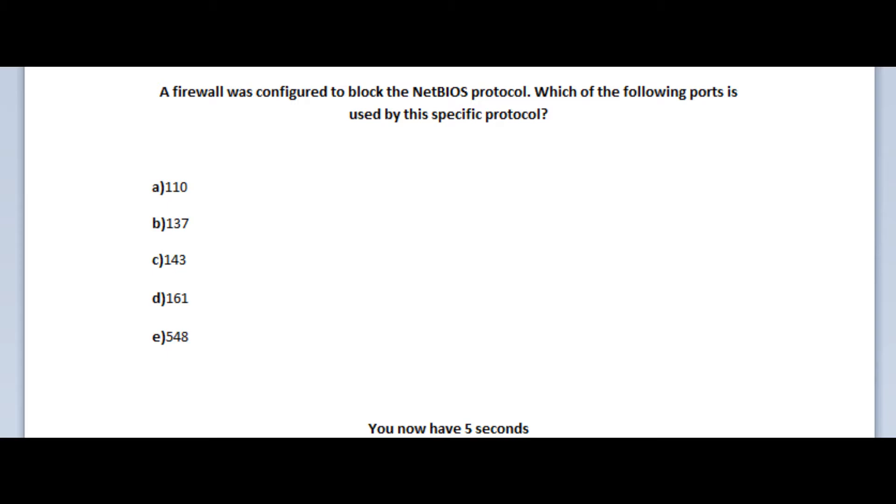Let us jump to our seventh question. A firewall was configured to block the NetBIOS protocol. Which of the following ports is used by this specific protocol? Is it A, port 110? Is it B, port 137? Is it C, port 143? Is it D, port 161? Or is it E, port 548? You now have 5 seconds.